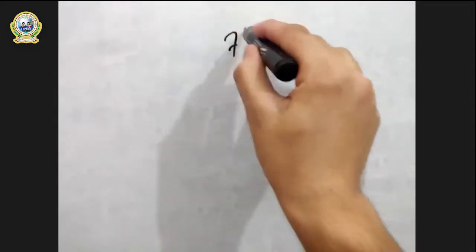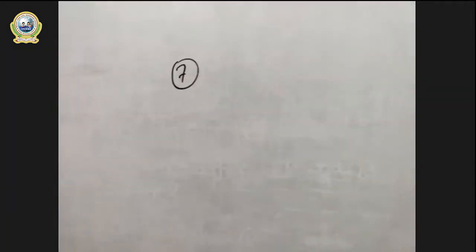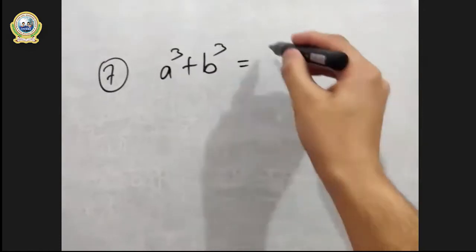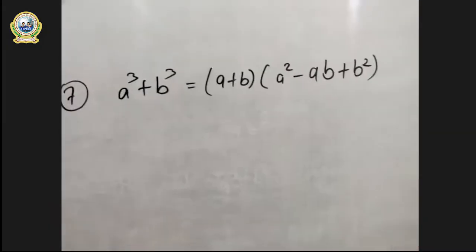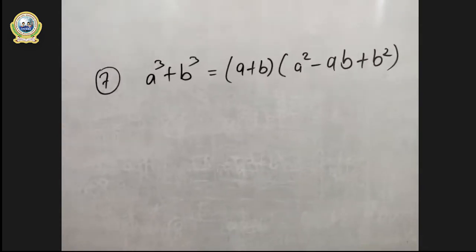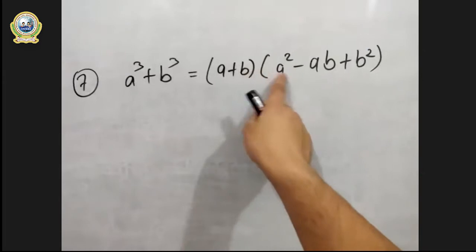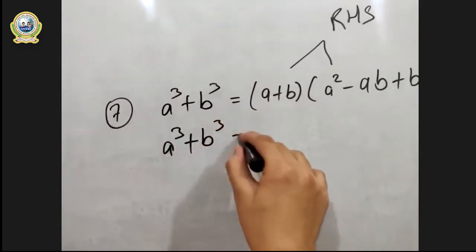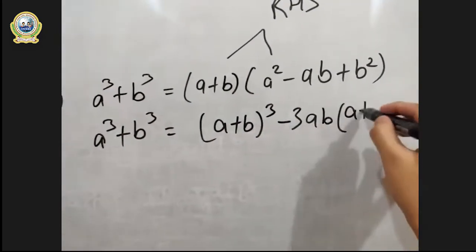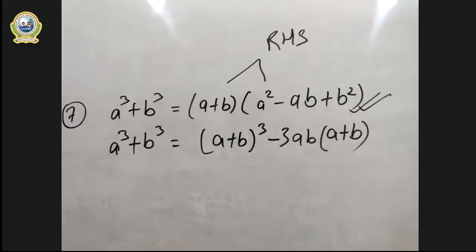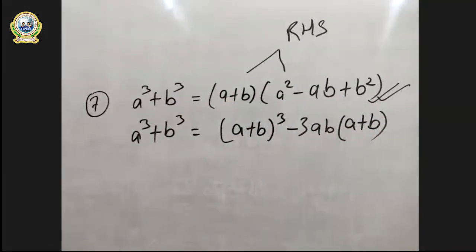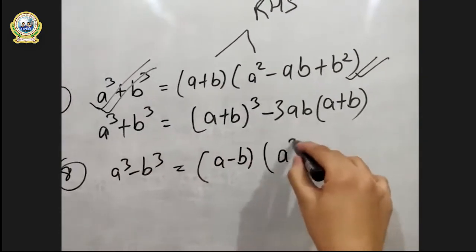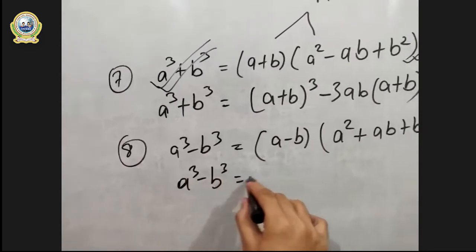Now it is number 7. Up to 6 I had written the formulas in the previous class. Let's resume from 7. Our second last formula is a³ + b³. It is a very important formula, and its expansion goes like this: (a + b)(a² - ab + b²). If you wonder where it came from, you can multiply those two expressions and you will end up getting this result on the left hand side.